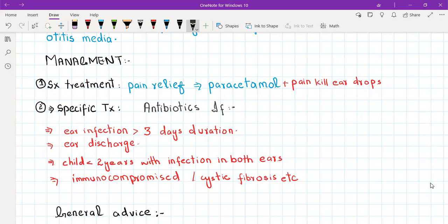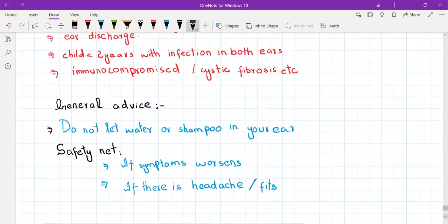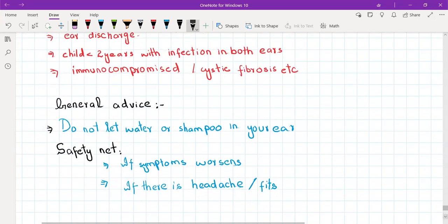You should also give general advice to the patient. General advice should be: don't insert anything in the ear, and while taking a bath, please protect your ear so that water or shampoo doesn't enter it. Safety netting should be for meningitis, so tell the patient that if your symptoms worsen or you experience severe headache or fits, then call 999 and go to the emergency department.